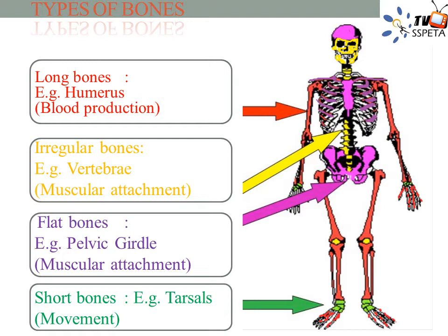Flat Bones — flat bones are thin, flattened, and usually curved. There are flat bones in the skull, the thoracic cage, sternum and ribs, and the pelvis. The function of flat bones is to protect internal organs such as the brain, heart, and pelvic organs. Flat bones can provide protection like a shield, and also provide large areas of attachment for muscles.